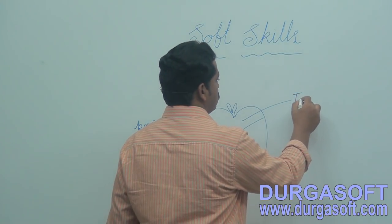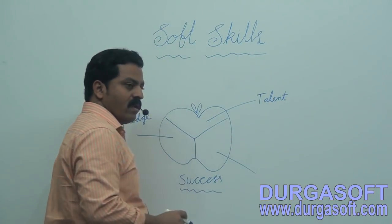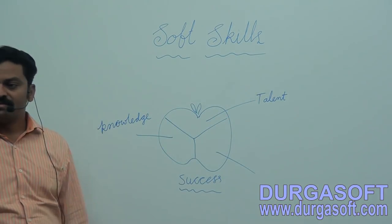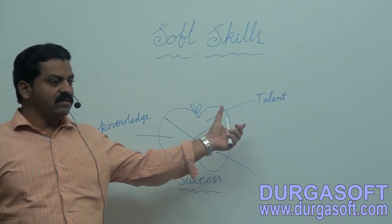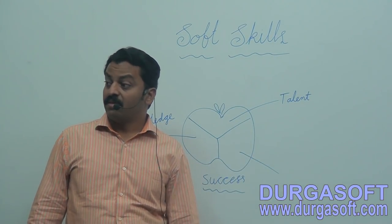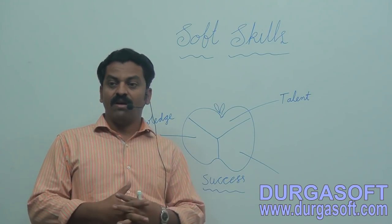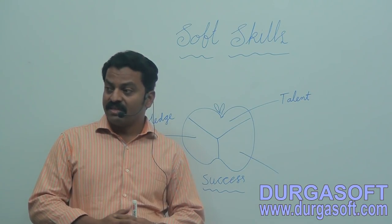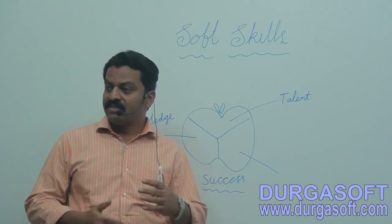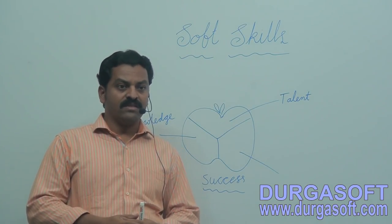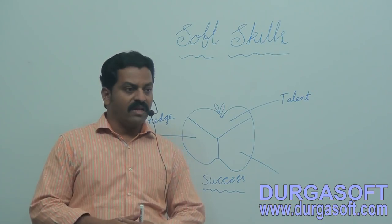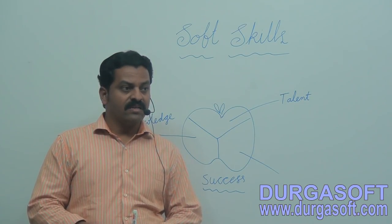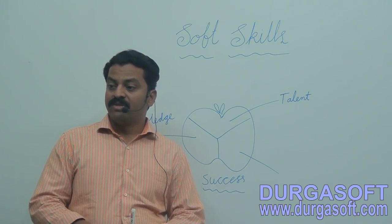Second is talent. Some people have got very good talent and they don't have sufficient knowledge. Either knowledge is missing or talent is missing. Some people have both - very good knowledge and very good talent also. But the third important thing is missing in their life. That is the reason they cannot come into limelight. They remain very ordinary throughout their life, below average personality. What is the third and most important thing?